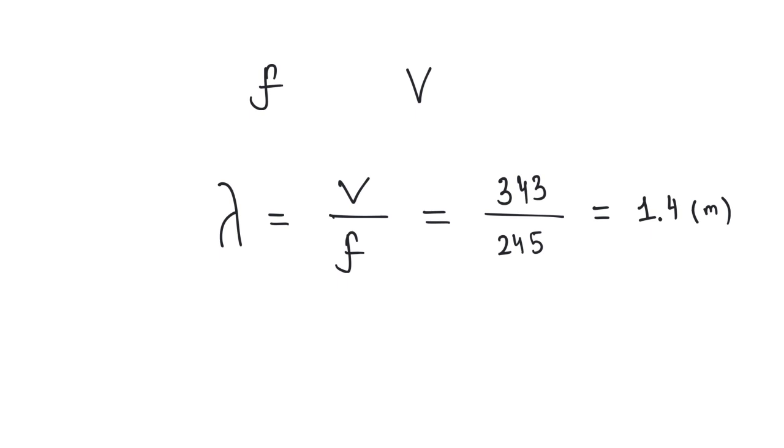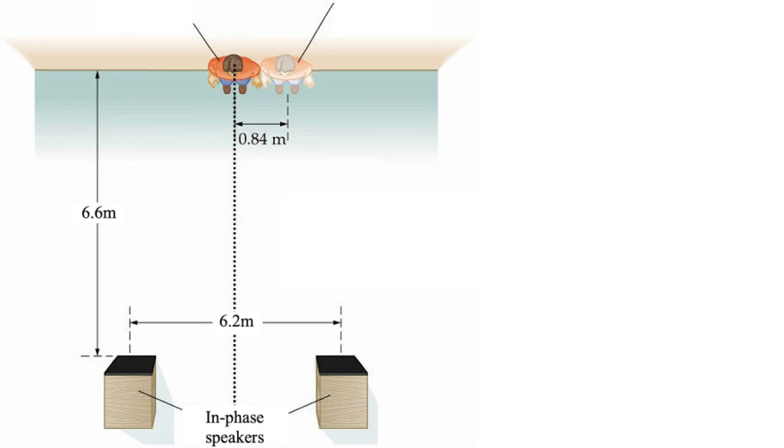Now, let's look at the picture and determine what distances waves from the first and the second speakers travel to reach the listener. We can denote these distances as x1 and x2 respectively. Now, we know that the distance between speakers equals 6.2 meters. If we draw lines among the listener and two speakers, we get a triangle. And the height of this triangle, according to the given, is equal to 6.6 meters.